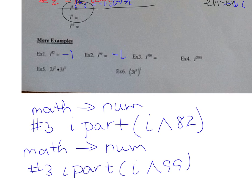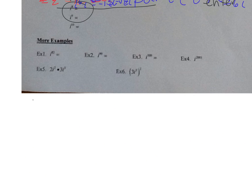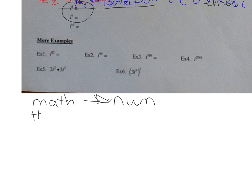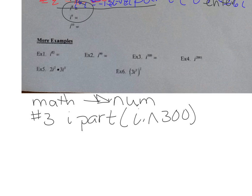Let's try i to the 300: math, go over to NUM, number three iPart, type i, carrot key 300, hit enter, and you get 1. Now you guys try i to the 2001: press math, go over to NUM, number three iPart, type i, carrot key 2001, and hopefully you got i.